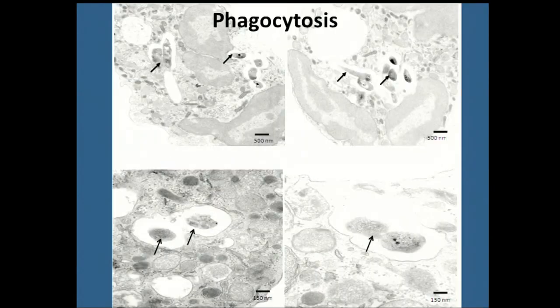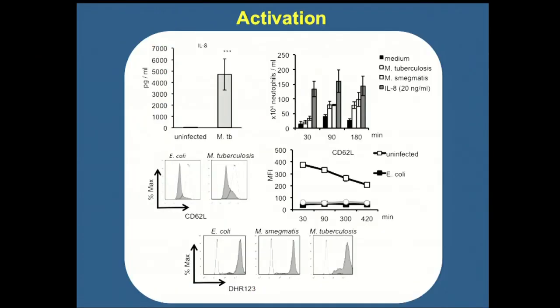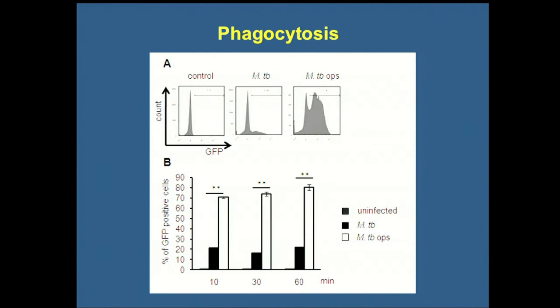The first thing — and this is in line with other publications — is that neutrophils can take the bacteria up, shown by electron microscopy and other assays. One thing we found is that if you pre-incubate the bacteria with fresh human serum, you increase the uptake by neutrophils quite dramatically. These are opsonized bacteria incubated just 30 minutes before I add them to the neutrophils, and this is presumably due to complement, because if I heat-inactivate the serum, I lose almost the entire effect.